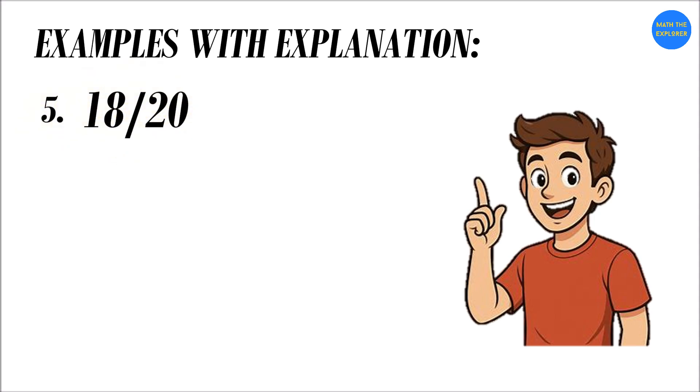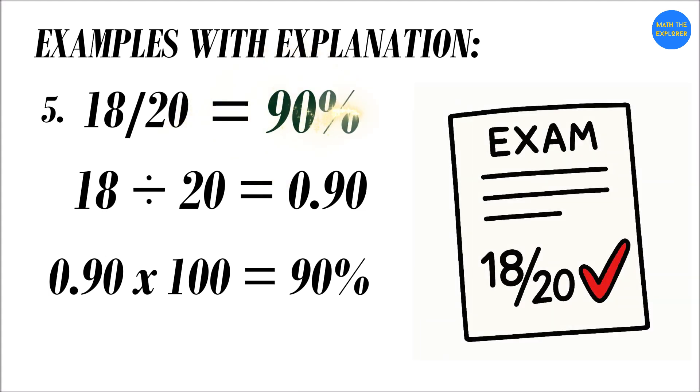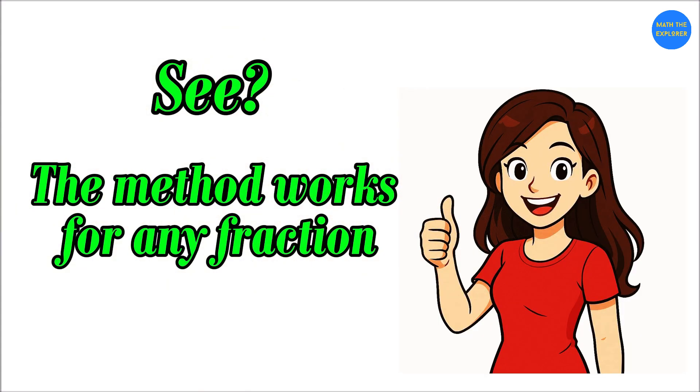Eighteen over twenty. Divide eighteen by twenty. Eighteen divided by twenty equals 0.90. Next, multiply by 100. 0.90 times 100 equals 90 percent. If you got 18 correct answers out of 20, that's a 90 percent score, usually an A grade. See? The method works for any fraction, even tricky ones.